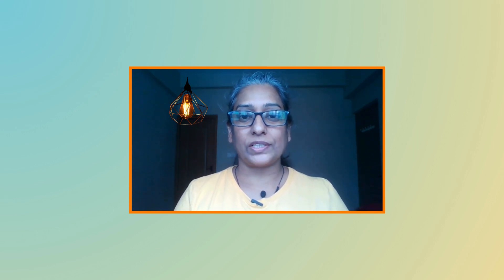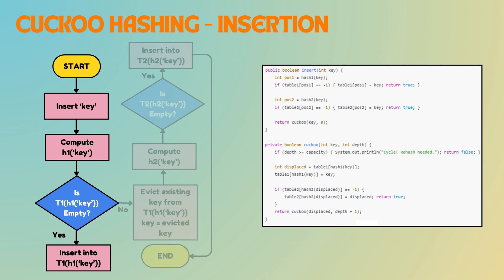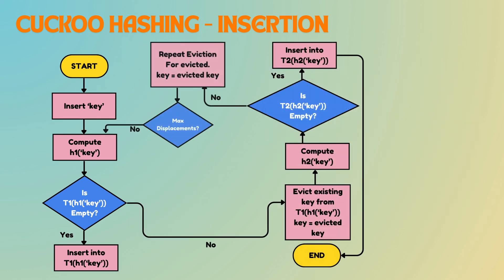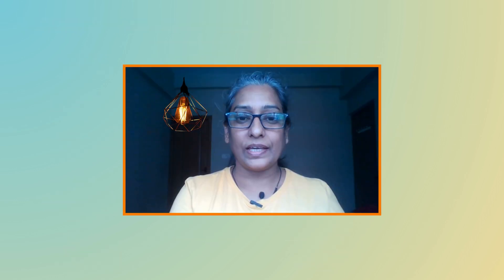To insert a key in cuckoo hashing, the key is first placed in table 1 using the first hash function. If the position in table 1 is occupied — that is, a collision — the key is placed in its corresponding position in table 2 using a second hash function. If the position in table 2 is also occupied, the key already there is displaced and recursively reinserted into table 1 at its new position. This process continues until all keys are successfully inserted, ensuring collisions are handled efficiently across both tables.